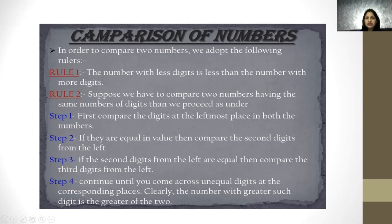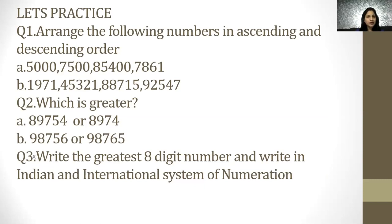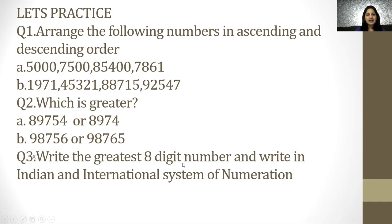Now practice these questions. When arranging in ascending order, we go from smaller to bigger. In descending order, we go from bigger to smaller. Question A: arrange 5,000; 7,500; 85,400; and 7,861 in ascending and descending order using the comparison rules. Question 3: write the greatest 8-digit number and write it in both the Indian system and International system of numeration. The greatest 8-digit number is 8 nines — 99,999,999. Thank you. I hope you have learned something from this online session.